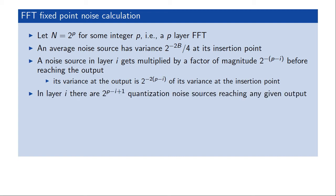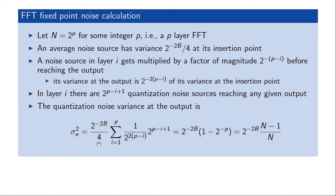We also have more noise sources in earlier layers. The total number of noise sources in layer i is two to the P minus i plus one. At the extreme, when i equals P the last layer has only two noise sources, while when i equals one the first layer has two to the P noise sources — equal to the number of FFT points. Layers in between follow this exponential relationship. To get the total fixed-point quantization noise, we sum the product of the noise variance per source, the attenuation factor, and the number of noise sources over all layers from one to P.